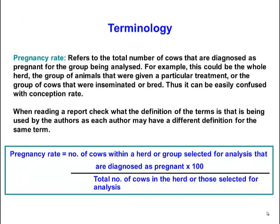Another term used is pregnancy rate. When people use the term pregnancy rate, they may actually be talking about conception rate — it depends on their definition. Other times, it refers to the total number of cows diagnosed pregnant as a percentage of the whole group that were treated, for example the whole herd or the group of animals given a particular treatment. This can easily be confused with conception rate, which is the percentage of animals that were actually inseminated.